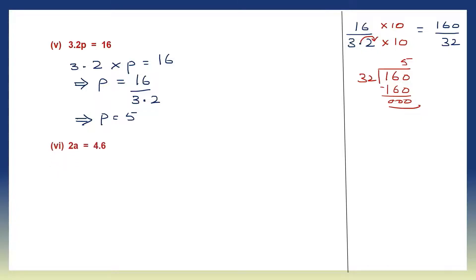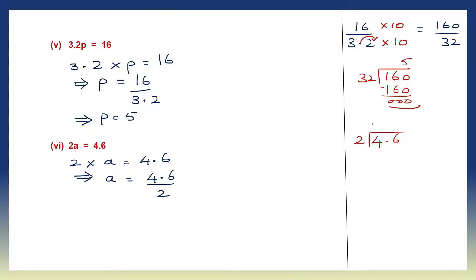Question 6: 2a is equal to 4.6, that means 2 into a equals 4.6. So to find the value of a, a is equal to 4.6 divided by 2. 2 twos are 4; carry the point up, bring the 6 down. 2 threes are 6. So the value of a is 2.3.